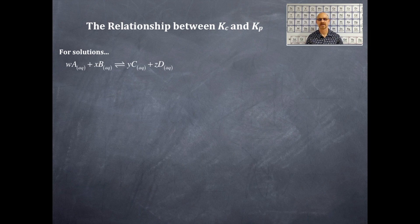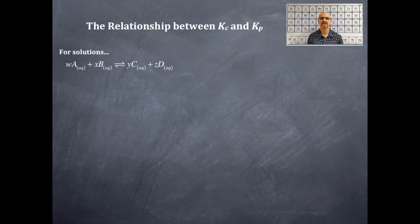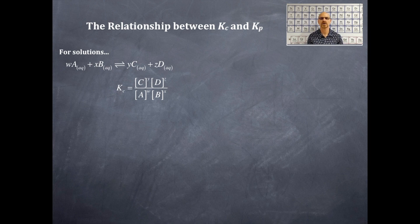For solutions, we have this equation: A plus B gives C plus D. A, B, C, and D are representing formulas. W, X, Y, and Z are representing the stoichiometric coefficients. Since this is for solutions, everything is going to be aqueous. This is called the Kc because these are in solution — products over reactants with the stoichiometric coefficients as exponents, with brackets representing concentration, which is typically molarity.